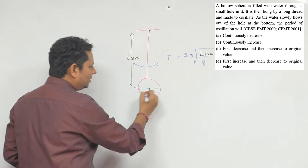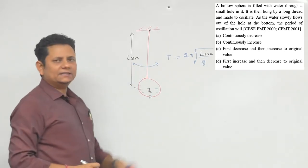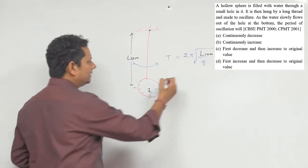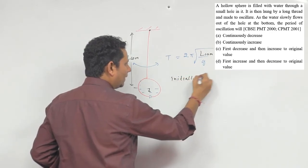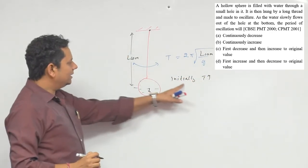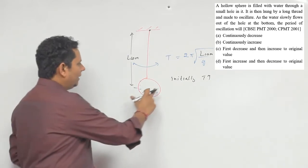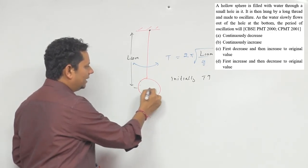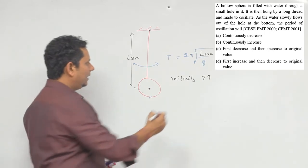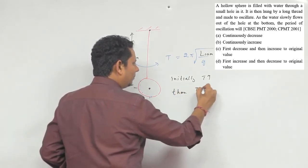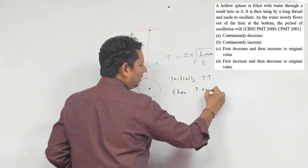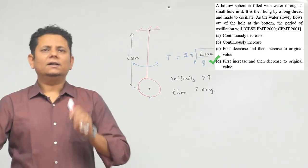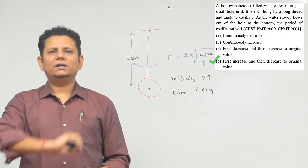जैसे-जैसे पानी गिरेगा, center of mass नीचे की तरफ shift होगा, यानि L_cm बढ़ जाएगा। इस case में initially time period increase होगा — तब तक बढ़ेगा जब तक पानी टपकता रहेगा। उसके बाद जब sphere पूरी तरह खाली हो जाएगी, तब center of mass फिर अपनी जगह वापस आ जाएगा और T original value पर वापस पहुँच जाएगा। So option D is correct — time period पहले increase करेगा, then it will decrease to its original value.